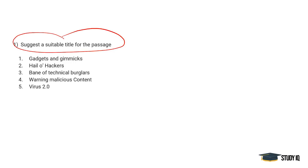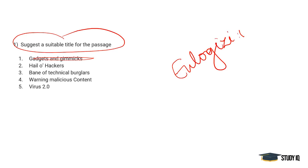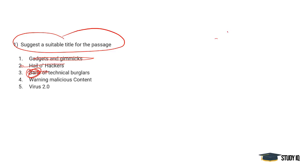Now let's discuss: suggest a suitable title for the passage. 'Gadgets and Gimmicks' — these talk about viruses. 'Halo Hackers' — no, it does not eulogize or praise hackers, so that won't do. 'Bane of Technical Burglars' — it's not actually just burglary; it is an entire developed market. The most suitable answer is 'Warning: Malicious Content — Virus 2.0,' which is the most suitable of all the options.